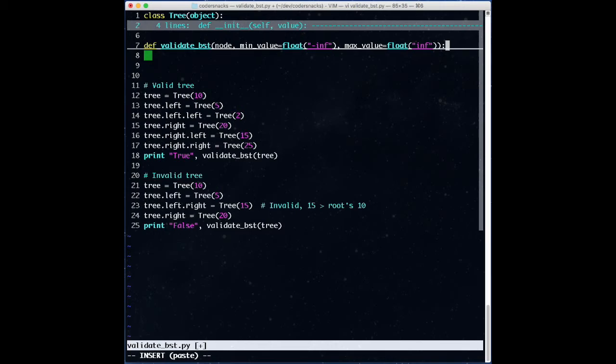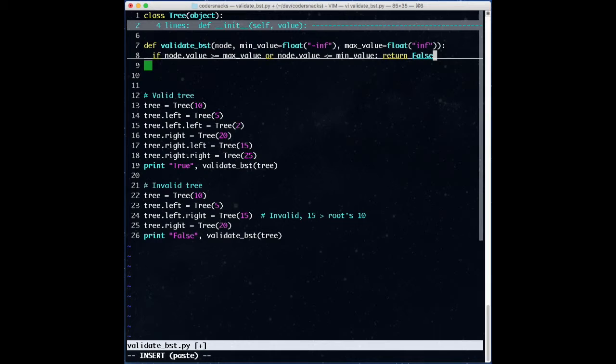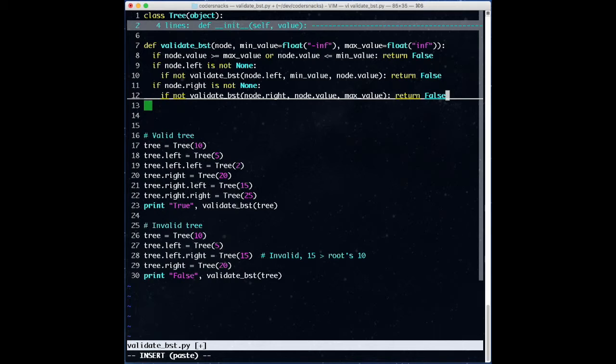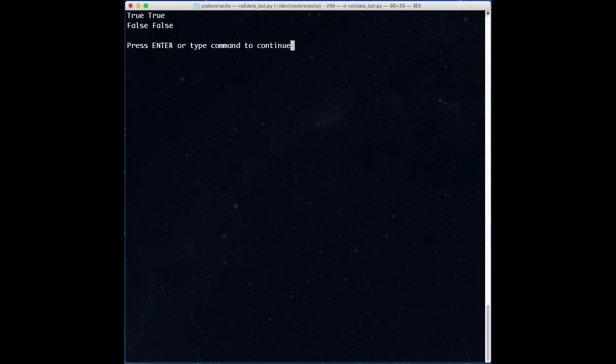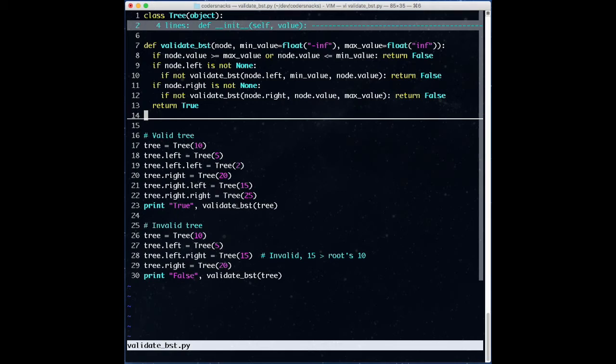We set the default bounds to be negative infinity and infinity. Then, we check whether our current node is in the bounds passed in. If not, we return false. Then, for each child, if it exists, we recursively check the subtree, changing the appropriate bound, the max bound for the left tree, and the min bound for the right tree. If either of those return false, we return false. Otherwise, everything is okay, and we return true. This runs in O of N. We're doing constant work, checking and changing bounds, for each node.